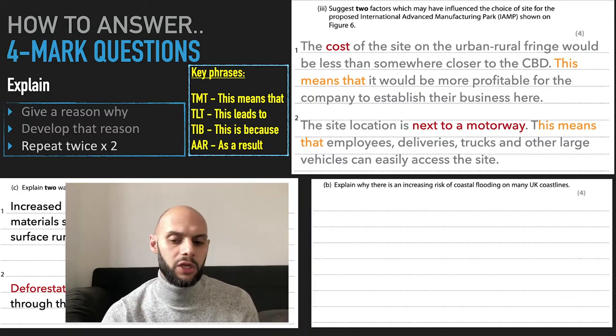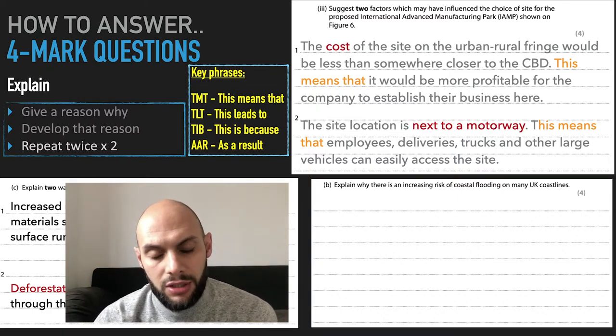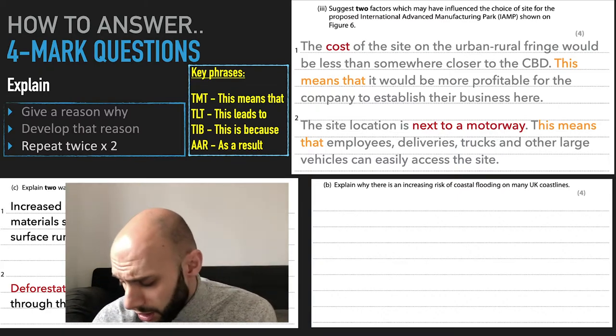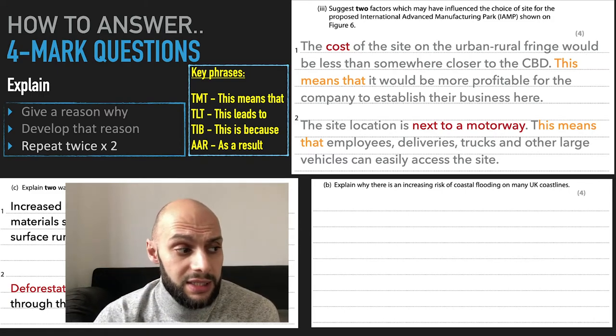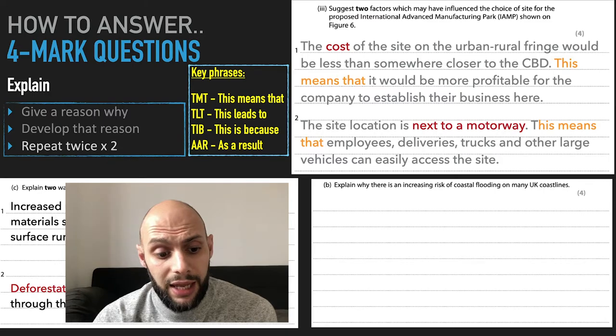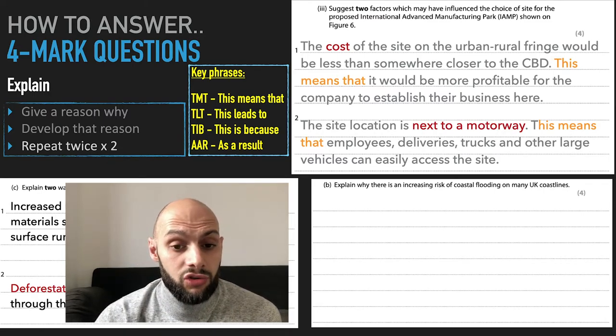So I'm going to talk about climate change. There's an increase in risk of coastal flooding in many UK coastlines because of climate change. Climate change increases the sea level. This increases the risk of extreme storms.